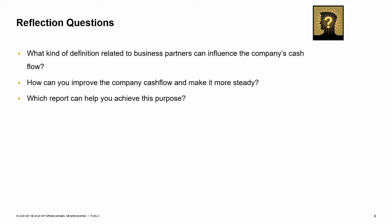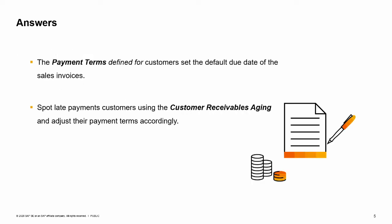The sales process affects the cash status of the business. What kind of definitions related to business partners can influence the company's cash flow? How can you improve the company's cash flow and make it more steady? Even when it is profitable, a company can go bankrupt due to cash flow problems, so keeping a positive cash flow is crucial.